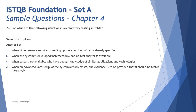Option D says: when advanced knowledge of the system already exists and evidence is to be provided that it should be tested intensively. That is contradicting — if a person is really skilled and has a lot of knowledge about the system, you don't really need to test it intensively. Exploratory testing alone is not suitable to provide formal evidence, because generally there is minimal documentation and exploratory testing is more informal. You cannot justify to stakeholders exactly what you did in detail. You need other test methods combined to do that.